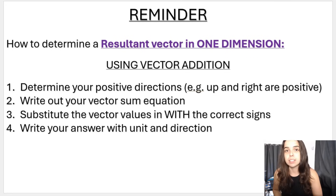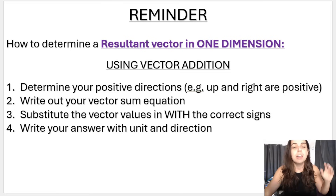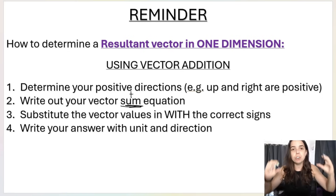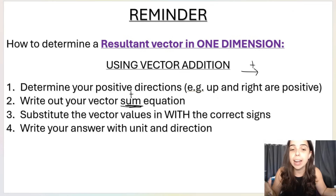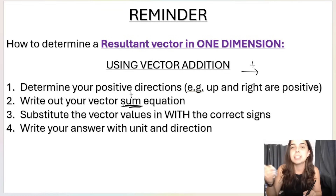When you are dealing with vectors in general in physics, you have to choose positive directions. So when dealing with vectors in one dimension, we're going to determine our positive direction — up and right are positive, or to the left is positive, or whatever you decide. Then you're going to write out your vector sum equation. The word sum means plus, so we first write all our vectors with plus signs in between. Then we substitute the values with the correct sign — if a vector goes right it gets a positive, if it goes left it gets a negative. Then we work it out and write our answer with a unit and a direction.